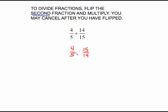5 goes into 5 once, 5 goes into 15 three times. 2 goes into 4 twice, 2 goes into 14 seven times. That's all the canceling I can do. So just multiply. 2 times 3 is 6, 7 times 1 is 7. And we're done.